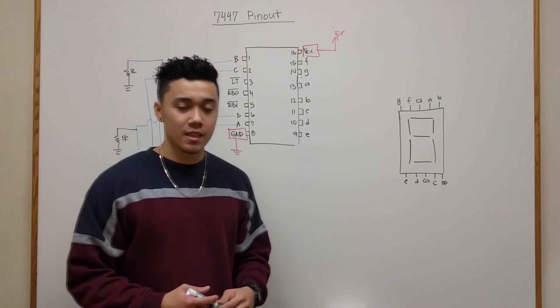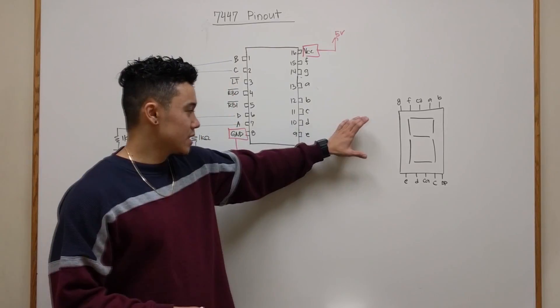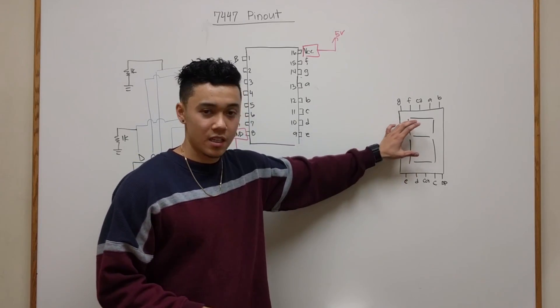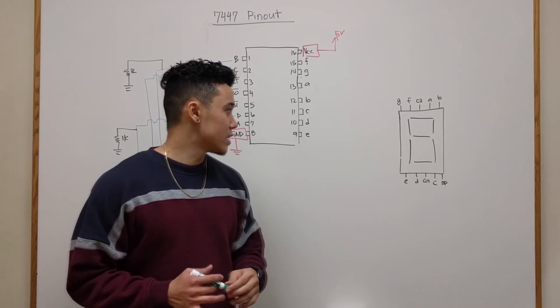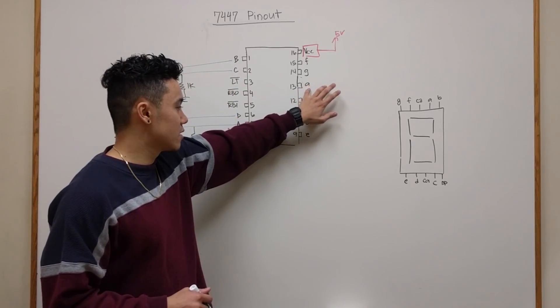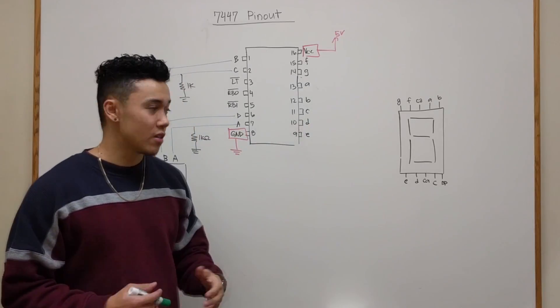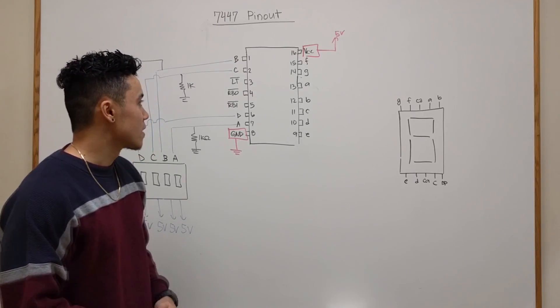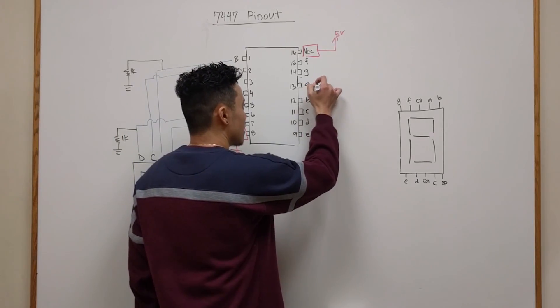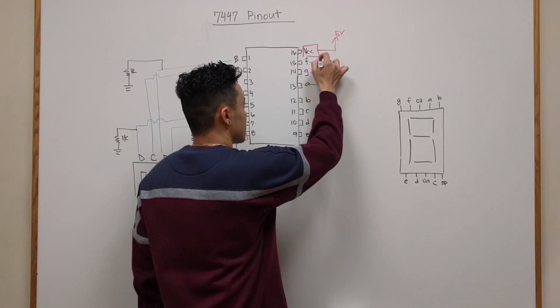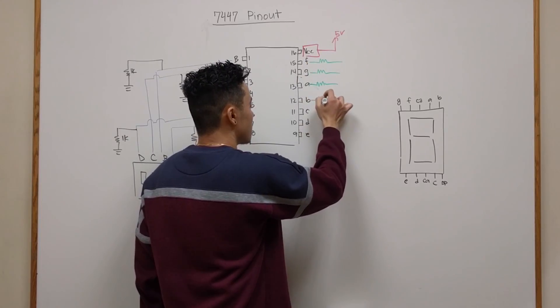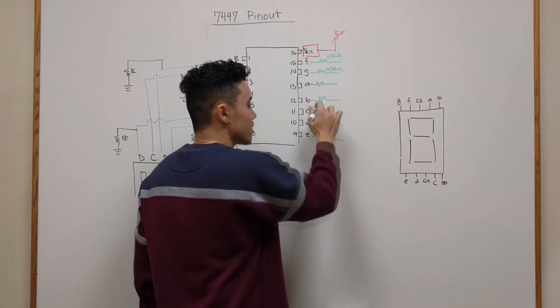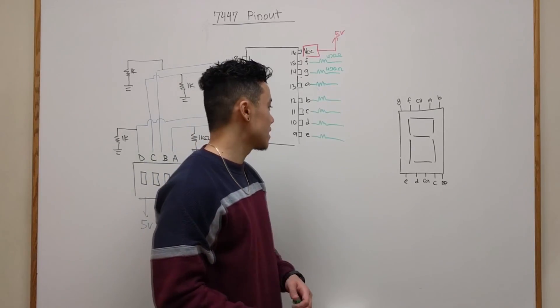Next we're going to make the connections to our 7 segment display. Since the 7 segment display is comprised of just individual LEDs, each one's going to have its own current limiting resistor. When you connect your pins to the 7 segment display, each one's going to need its own current limiting resistor. In my case I'm using a 470 ohm resistor. So we'll go ahead and connect a current limiting resistor to each individual pin.